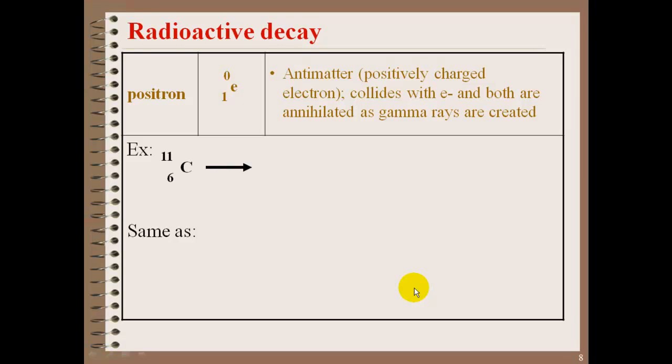Here's an example of a positron decay. Carbon-11 goes through positron decay. You get boron-11. You'll see a change in the number of protons right here, but no change in the mass. On this side, plus 1 and a positive 5. A positive 1 and positive 5 is a 6. And the mass is 11 on both sides. So your mass and number of protons need to equal.